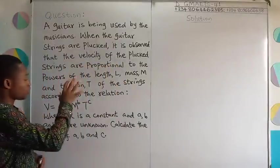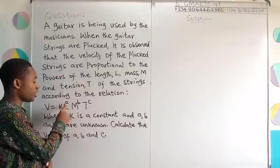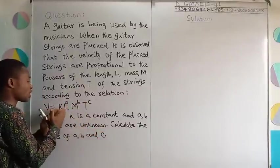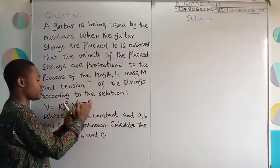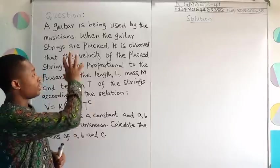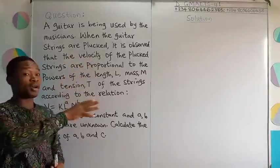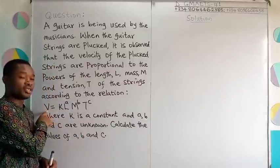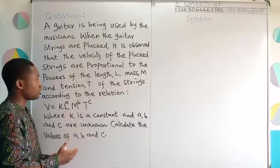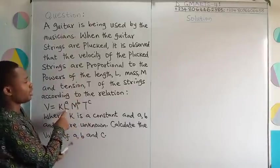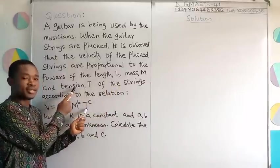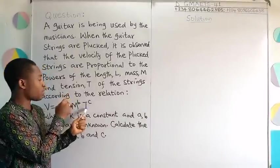Here on the board, I've got this question where I am required to obtain a value of A, B, C. You can say that given that V is equal to K L raised to the power A, M raised to the power B, T raised to the power C. And of course, from the question here, it's about a plucked guitar string. V is the velocity, and then K is the constant according to the definitions given here. In this question, L represents the length of the string, M is the mass, and then T, this T is tension, not time in this case. Take note, please.